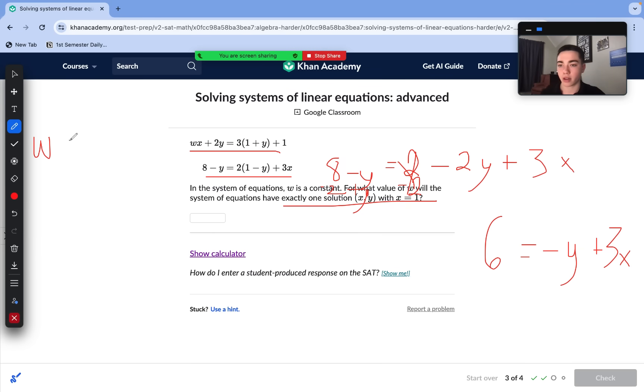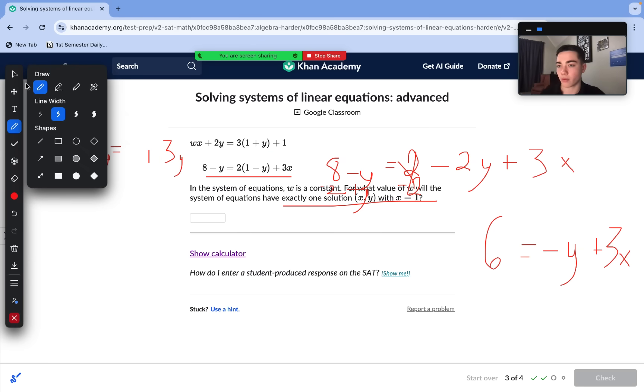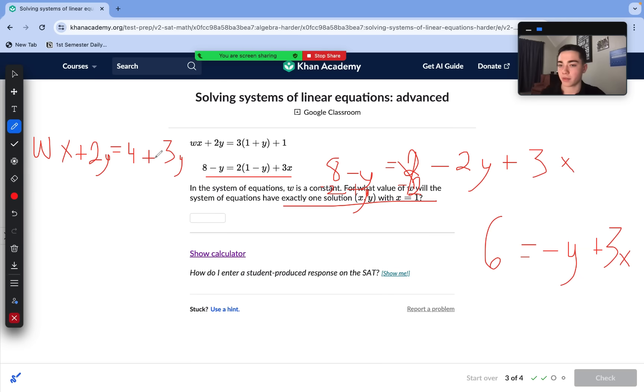And now let's simplify that top equation. So we have wx plus 2y equals 3 plus 3y plus 1. First of all, on our right side, 3 plus 1 is 4. So we can just replace that with 4 plus 3y. Now we can go ahead and subtract out 2y to just reach y. Move the 4 over. Move the wx over. So we have negative 4 equals negative wx plus y.